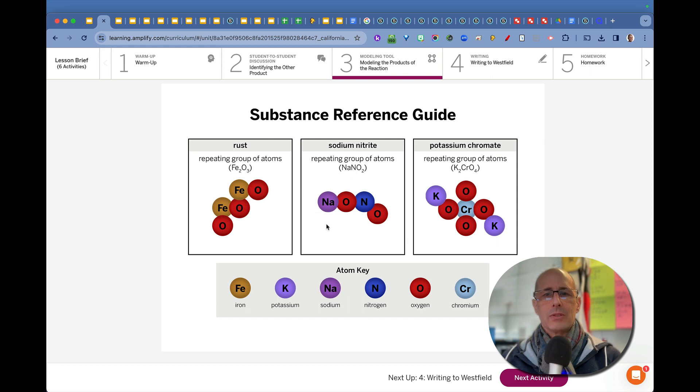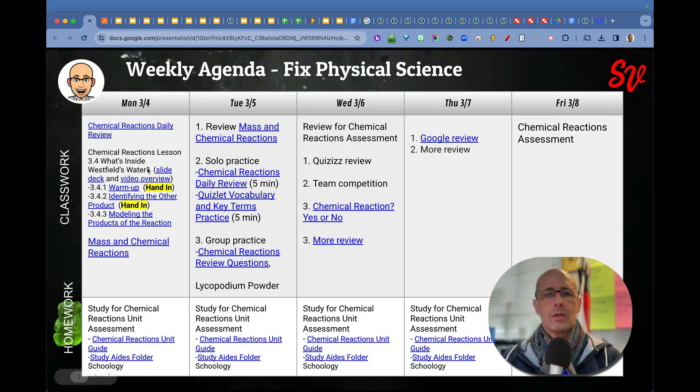Sodium nitrite is the only possibility other than the rust that was produced because there was no potassium in the water. There was no chromium in the water, so it could only have been sodium nitrite. That was the end of the chemical reactions unit.